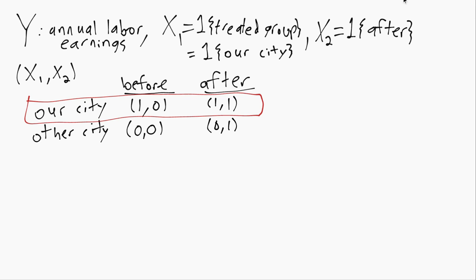So that is one bad approach, to only use our city and just do this before after comparison. Another bad approach would be to only look at the after period and compare our city. So look at our city's mean earnings and subtract the other city's mean earnings.